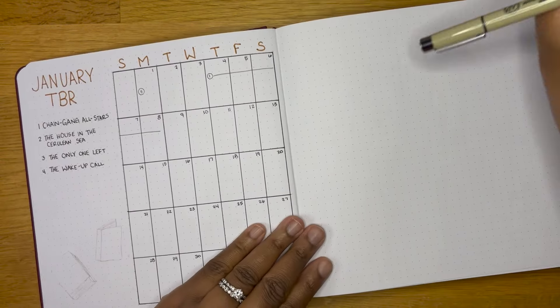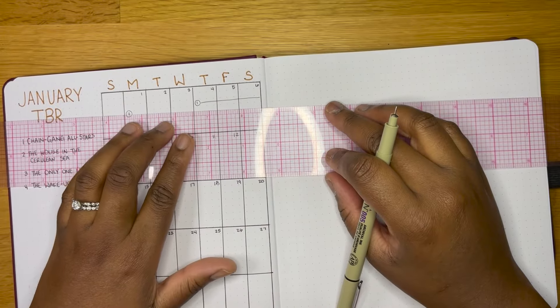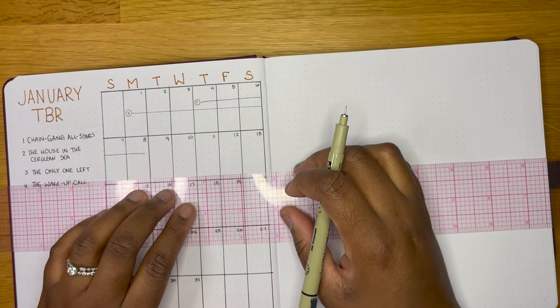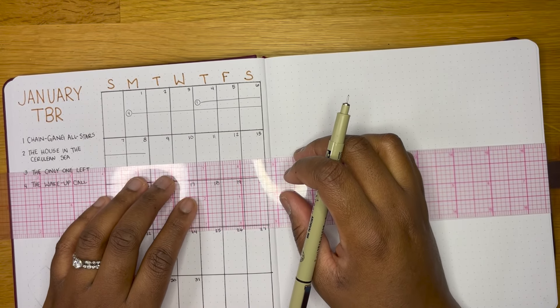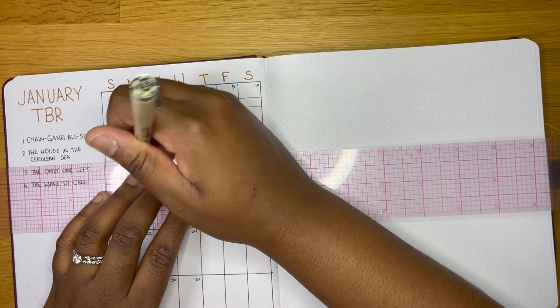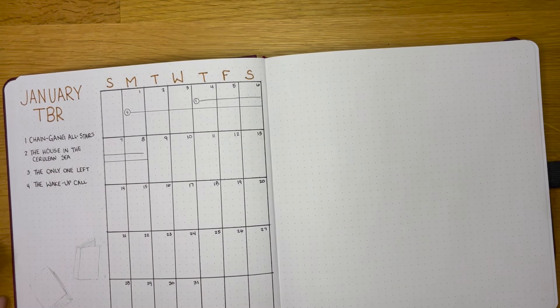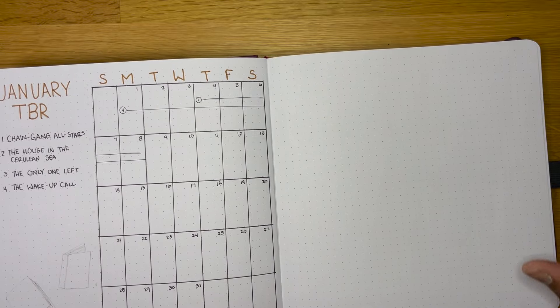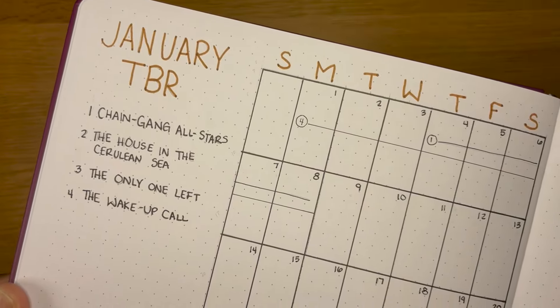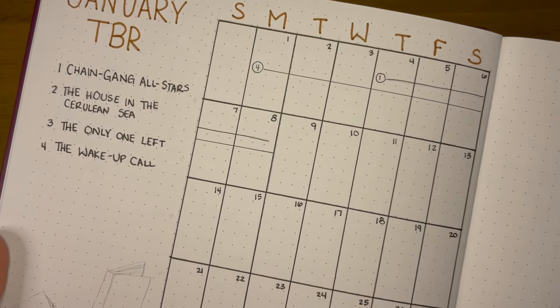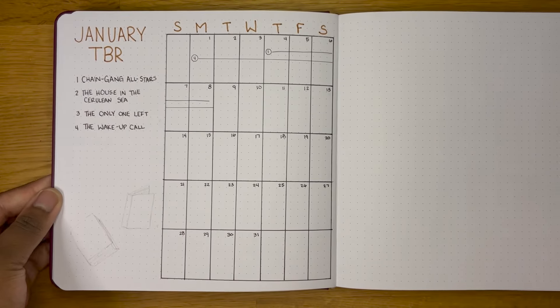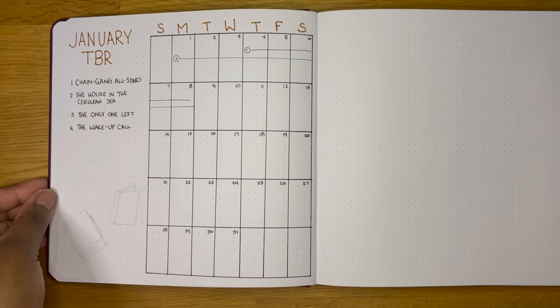I'm going to leave the right hand side blank for now, but this will be where my stats are going to go for my reading for the month, so how many fiction, how many non-fiction, how many star ratings, all those kind of things. I think I'm also going to track least favorite and favorite of the month as well. Yeah, that's what's going on here. We're going to try this out.